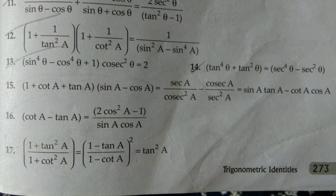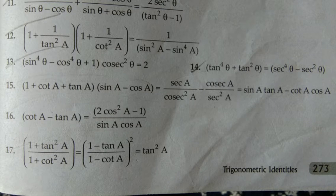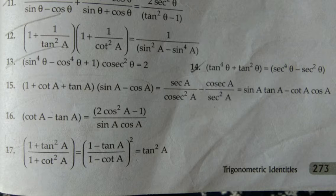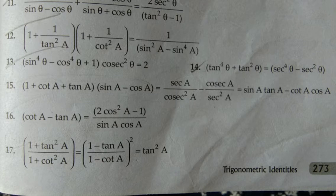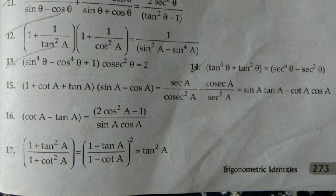For question number 16, if you look at the left-hand side you have cot a minus tan a. We do direct substitution, taking the LCM. Substituting cot as cos by sin and tan as sin by cos, taking LCM gives us cos square a minus sin square a by cos a sin a in the denominator. Now look at the right-hand side.